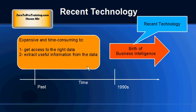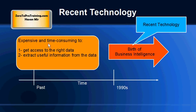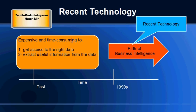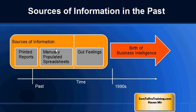From a technology perspective, business intelligence was born in the 1990s. Before that, different methods were used to extract useful information from raw data. In the past it was very expensive and time-consuming to get access to the right data, and even when you had access, extracting useful information was not easy. That is one reason why most decisions were not based on actual information.